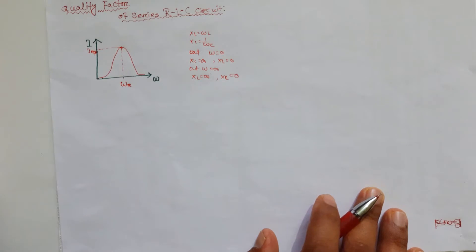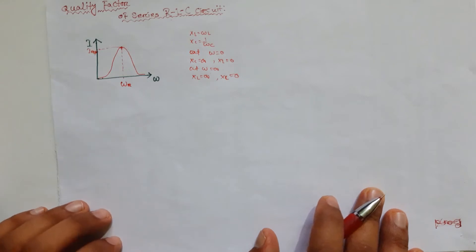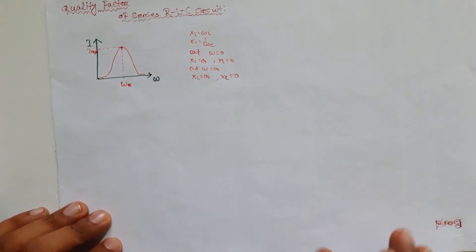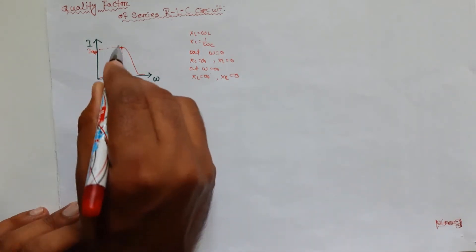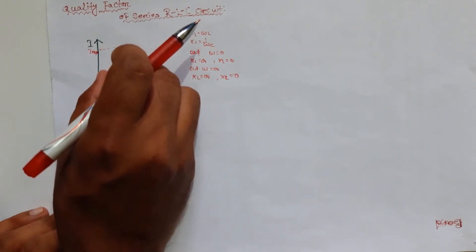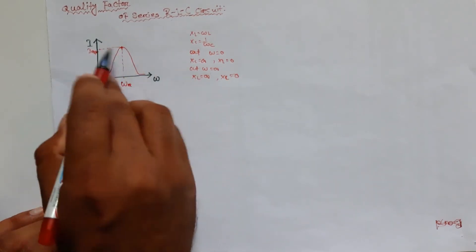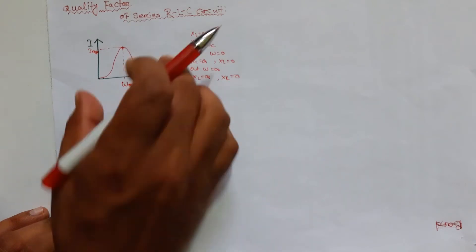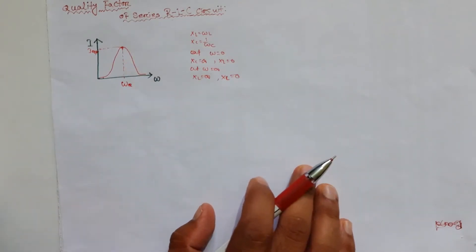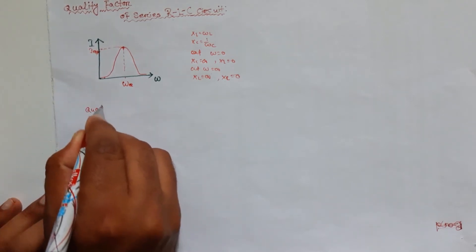To achieve a particular signal we should know the quality factor. If the sharpness is more, then the quality factor will be high. When the quality factor is high, we can achieve more signal at a particular zone. The quality factor is defined as follows.